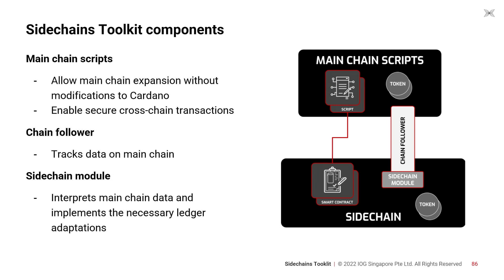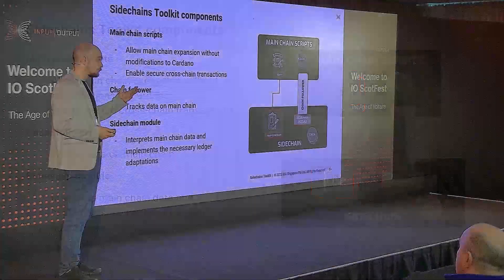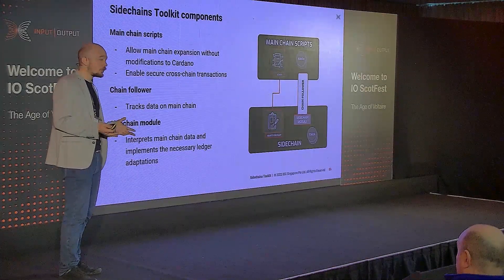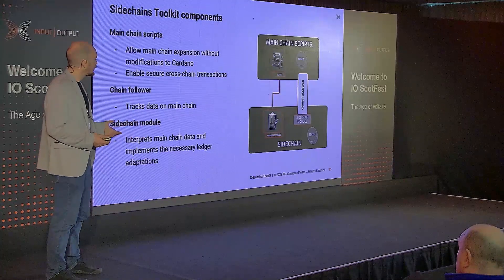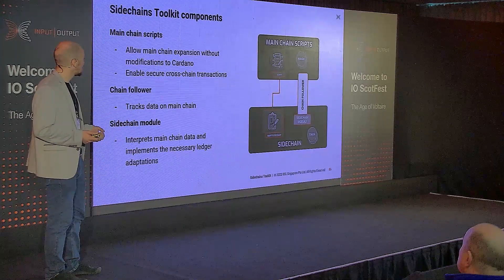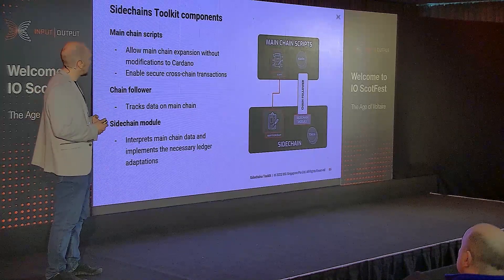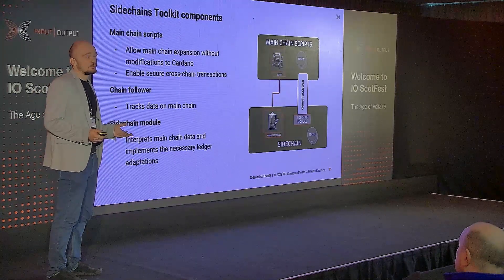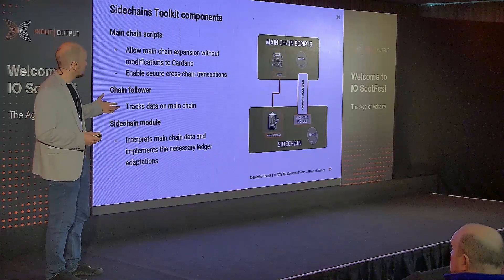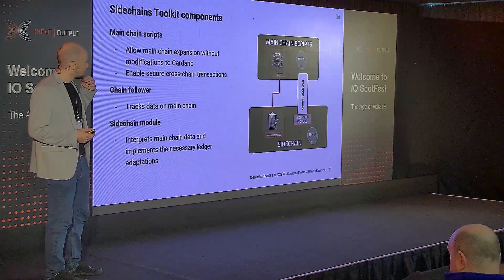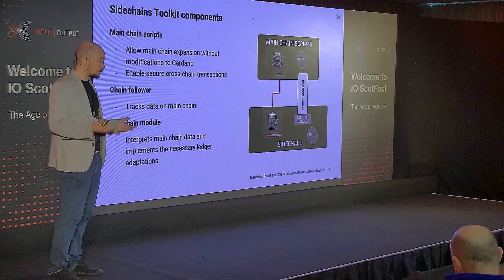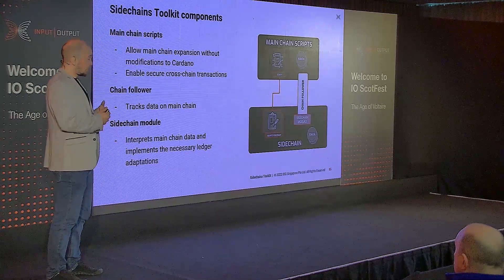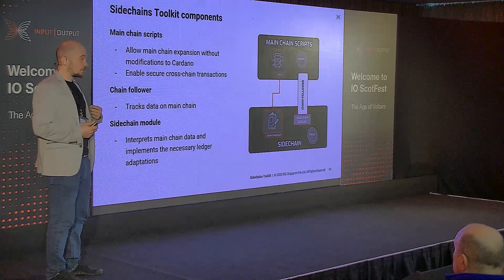So what is the sidechain toolkit in particular? We have the mainchain, and on-mainchain scripts allow us to establish the relationship between mainchain and sidechain — so data is being managed on-mainchain. There is a set of Plutus scripts that do that, that allow us to maintain a sidechain. Besides that, there is also a chain follower, a general-purpose piece of logic that allows us to observe data from mainchain and somehow transform it on the sidechain via the sidechain's module. Those are the three components we consider the toolkit.